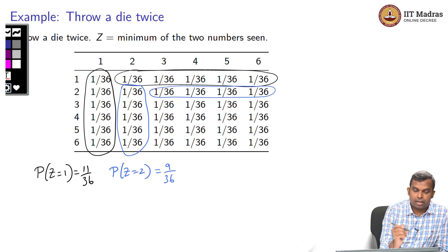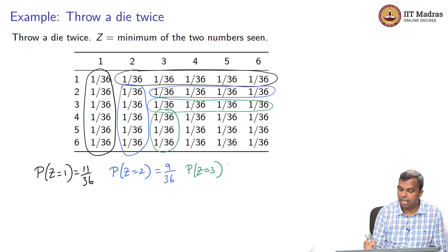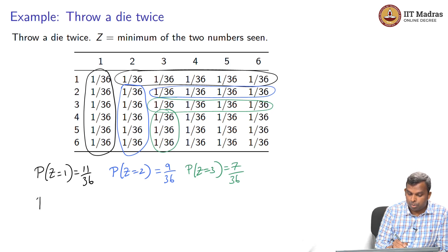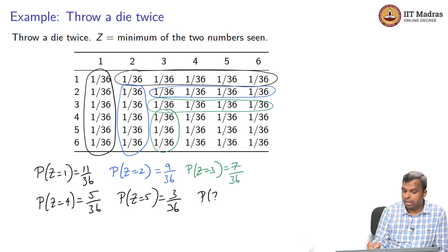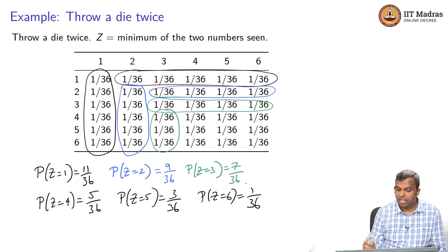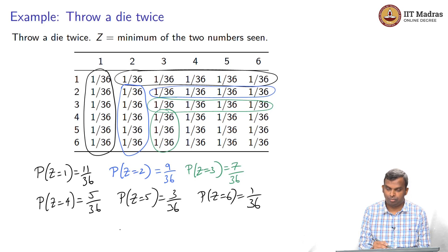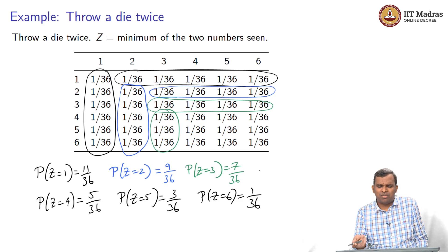What is the probability that Z equals 3? The minimum of the two has to equal 3, giving 7 by 36. So probability of Z equals 4 will be 5 by 36, probability that Z equals 5 will be 3 by 36, and probability that Z equals 6 will be 1 by 36. You can check: 1 plus 3 plus 5 plus 7 plus 9 plus 11 equals 36, confirming it is a valid distribution.